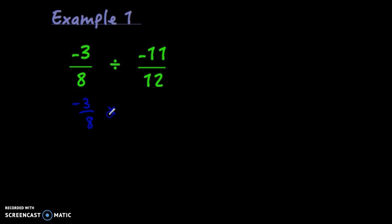And then instead of dividing, we're multiplying by the reciprocal. So instead of negative 11 over 12, we'd have 12 over negative 11. And we can do this just like we did before.